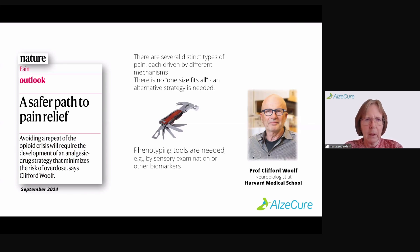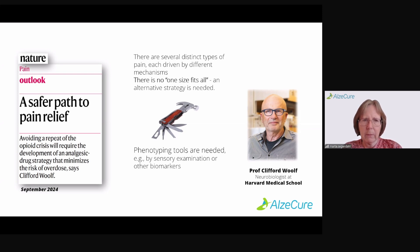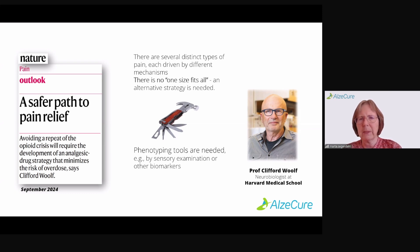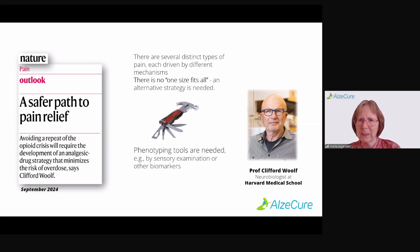As you may be aware, there is an opioid crisis in the US. There was recently, in September this year, an editorial written by Professor Clifford at Harvard Medical School stressing this. There is no one-size-fits-all, because there are a number of different pain diseases — they're all different, they have different characteristics, and the same drug cannot be used to treat all of them. We need not only phenotyping tools to know who to treat, but also specific treatments to address the specific ailments in the different pain indications.